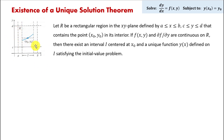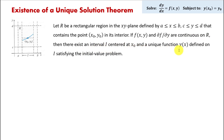Here is that rectangular region and we can see boundaries for y and for x. We also can see the point x sub 0, y sub 0 within that region. Continuing: if f of xy — and the partial derivative of f with respect to y — are both continuous on R, then there exists an interval I centered at x sub 0 and a unique function y of x defined on I satisfying the initial value problem.